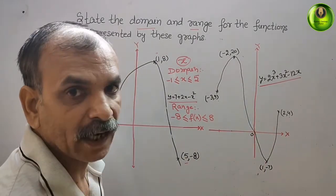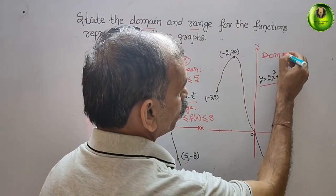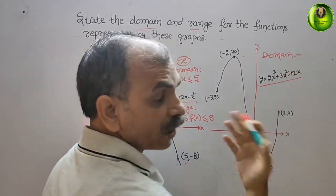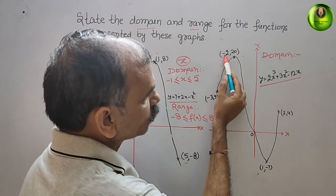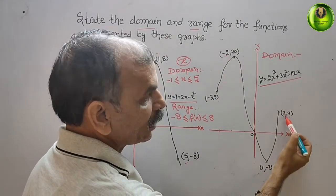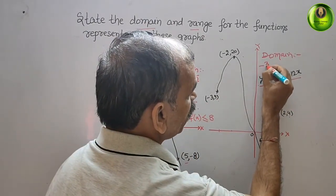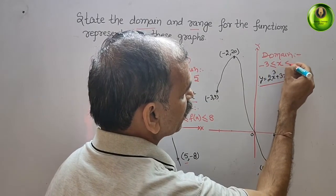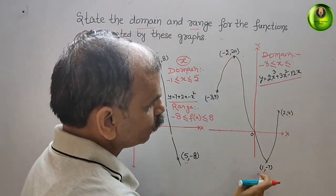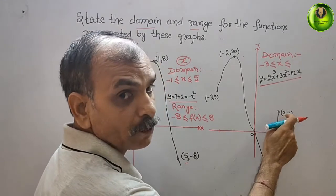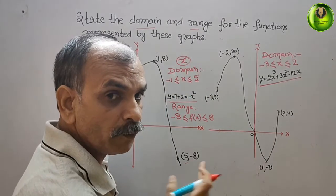Now for the second graph, we find the domain again by looking at the x values. The x values visible are minus 3, minus 2, 1, and 2. The minimum is minus 3 and the maximum is 2, so the domain is minus 3 less than or equal to x less than or equal to 2.